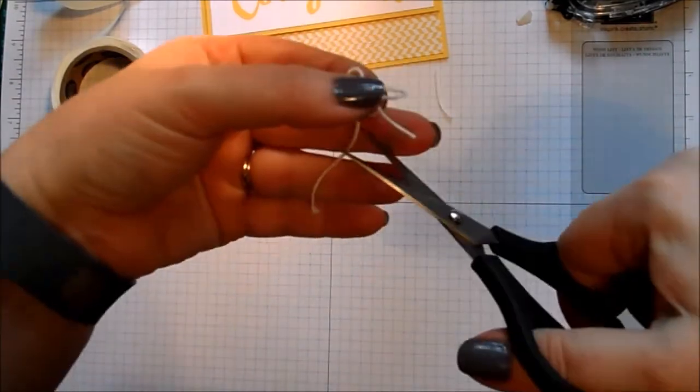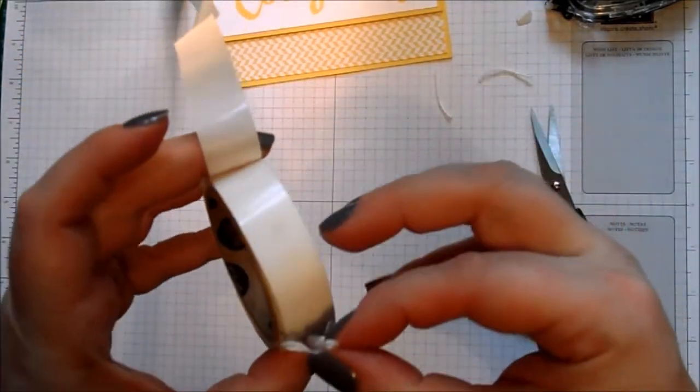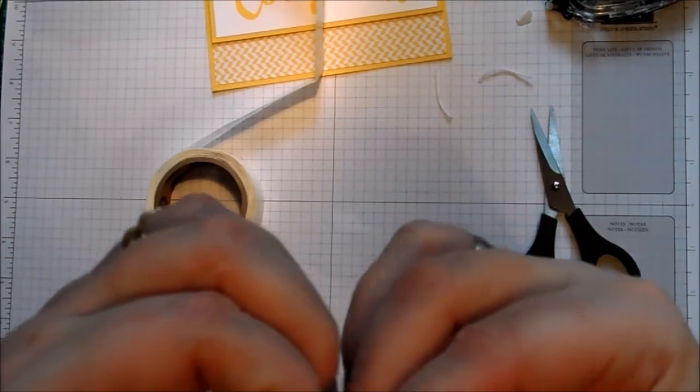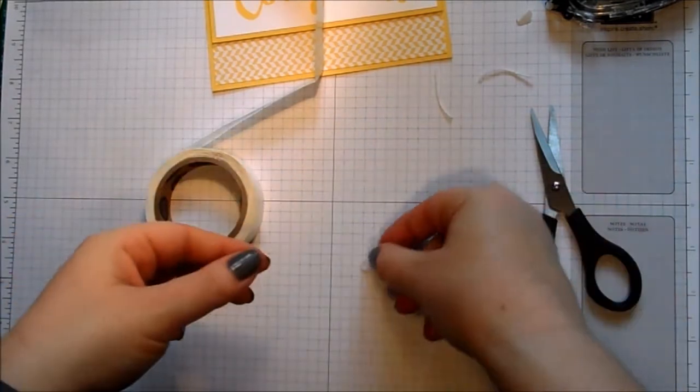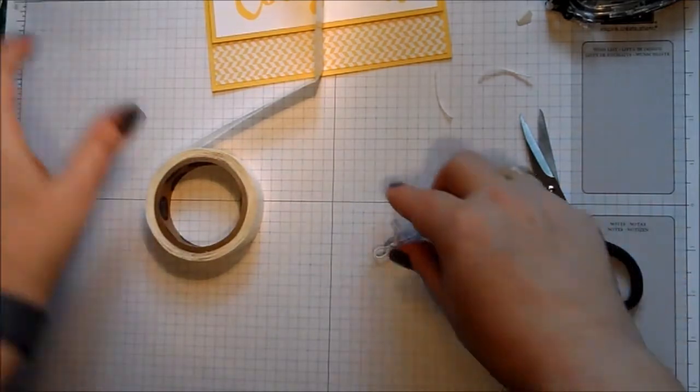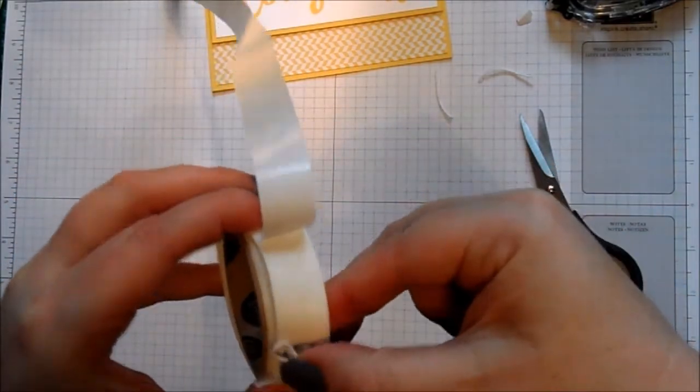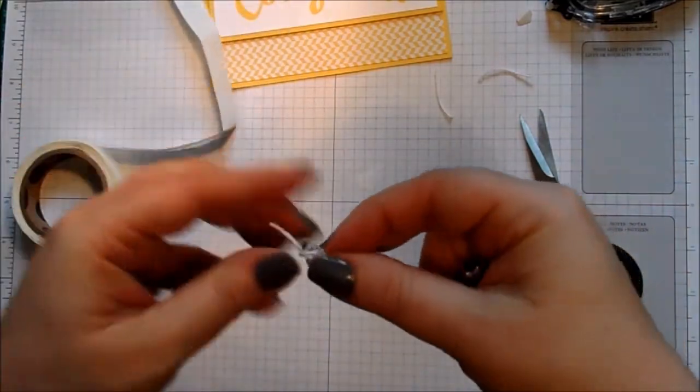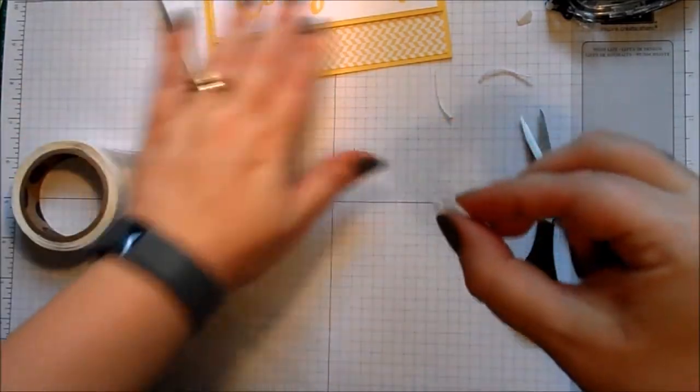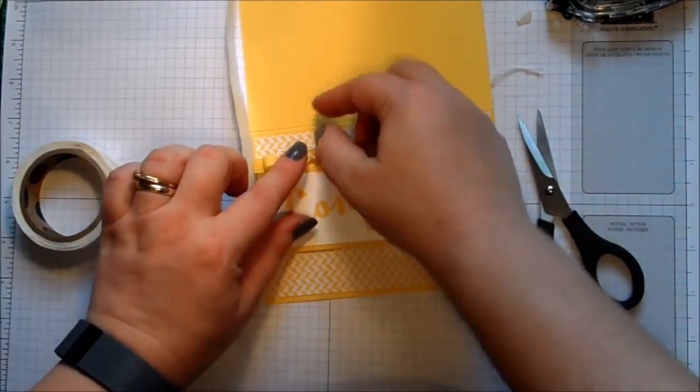We'll trim the tails. And we'll use another glue dot on the back of the button - not on my fingernail, that wasn't supposed to happen. There we go. Bring that in and pop that one in the middle.